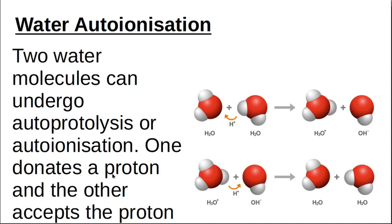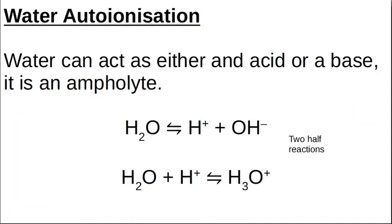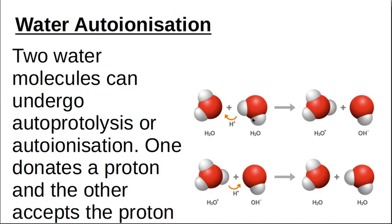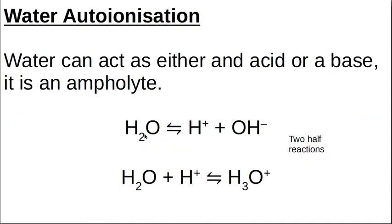So one is a proton donor and one is a proton acceptor. Remember that this is being an ampholyte. If you donate a proton, you're an acid. If you accept a proton, you're a base. So water can be an acid or a base — it's an ampholyte. And these are the two half reactions. You can either write it as 2H₂O → H₃O⁺ + OH⁻, or sometimes scientists write it with just one water splitting into a proton and a hydroxide ion. Either way, water is acting as an ampholyte because it can donate a proton or accept a proton and become a hydronium ion.